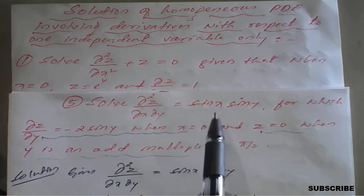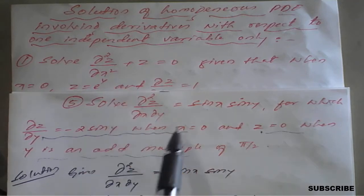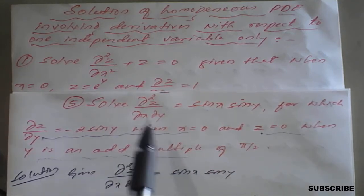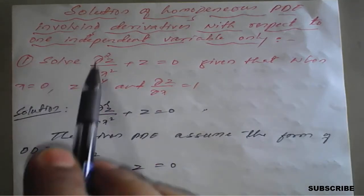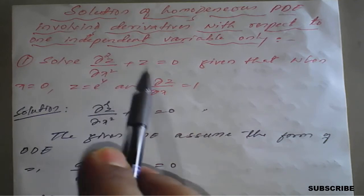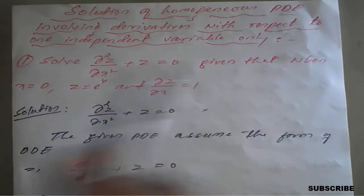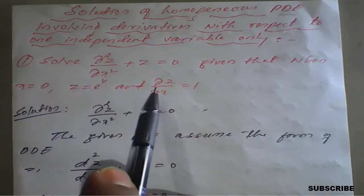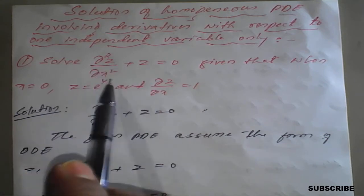The way of proceeding is the same but with a small change. Those examples were completed in the previous class. In today's class we will solve: ∂²z/∂x² + z = 0, given that when x = 0, z = eʸ, and when x = 0, ∂z/∂x = 1. These are the conditions we need to apply.